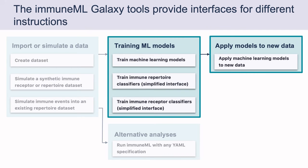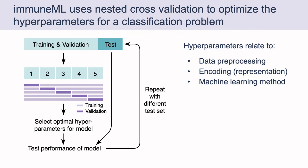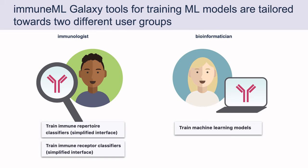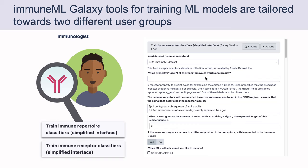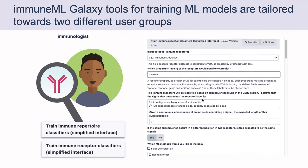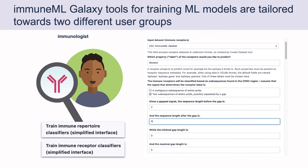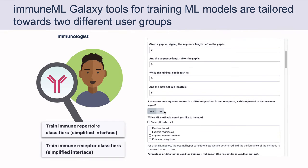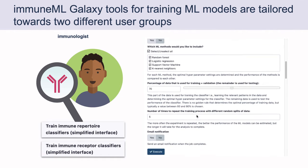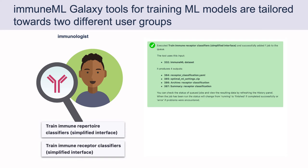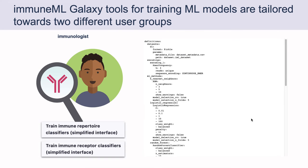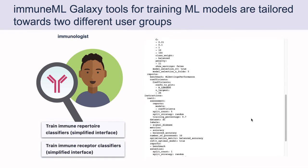The following tools can be used to train and apply machine learning models. ImmuneML uses fully configurable nested cross-validation to find the best hyperparameters, covering data preprocessing, encoding, and the machine learning method. We tailor the Galaxy tools for training to two different user groups. For immunologists, we provide simplified interfaces with questions related to the assumptions they have about their data. Based on their answers, the most appropriate encoding is chosen, and technical settings are largely predefined. This tool also exports the internally generated YAML specification to the Galaxy history, which can be used as a stepping stone to the more advanced interface.